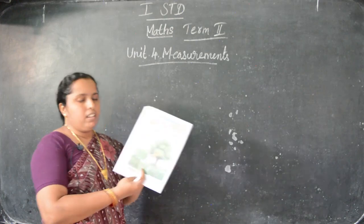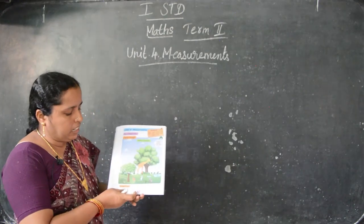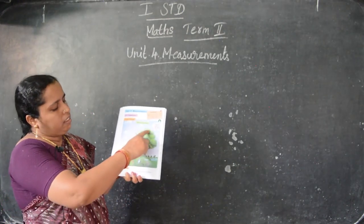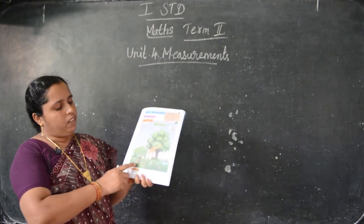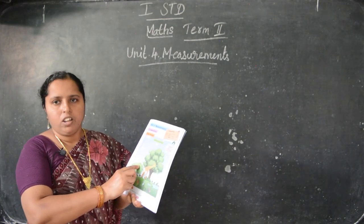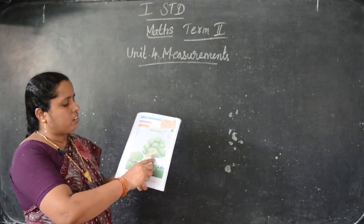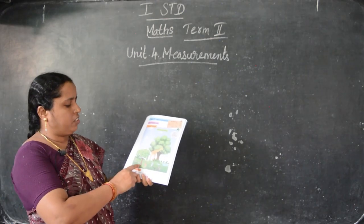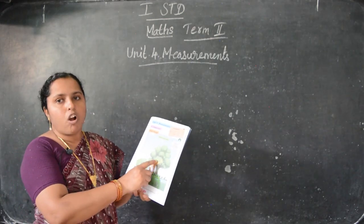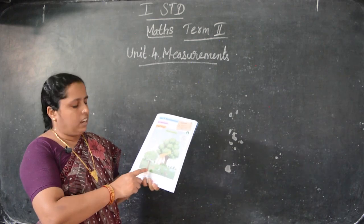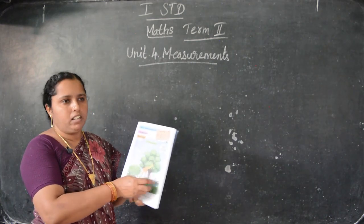In your book page number 39, see - this is a tall tree. This is a short tree. This one is tall, this one is short. Like that, see, this is a giraffe. This is a tall animal. And here see, deer. This is a short animal.